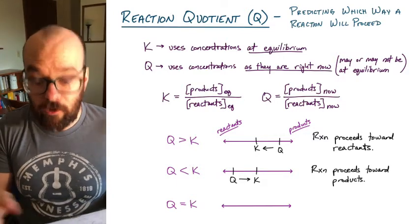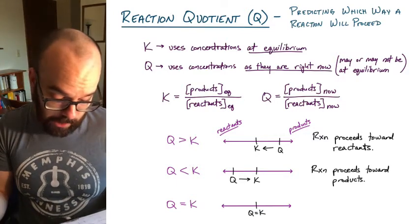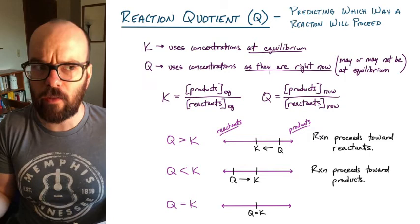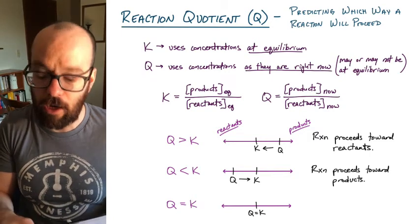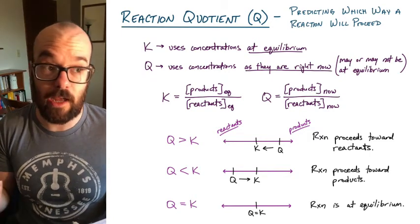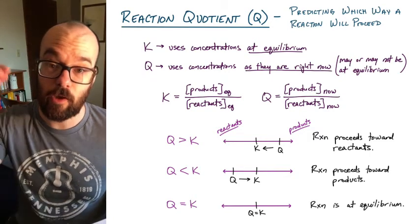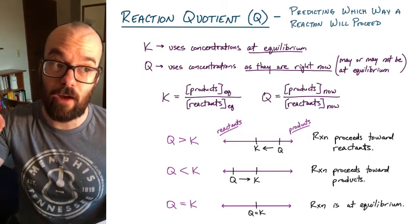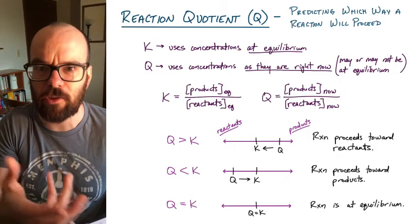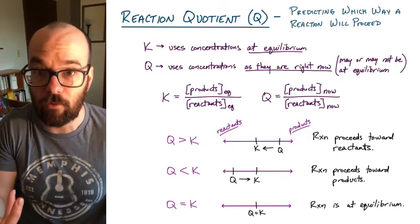Finally, if Q equals K, that simply means we're already at equilibrium. The current state right now is the same as the K value, which is the equilibrium state.